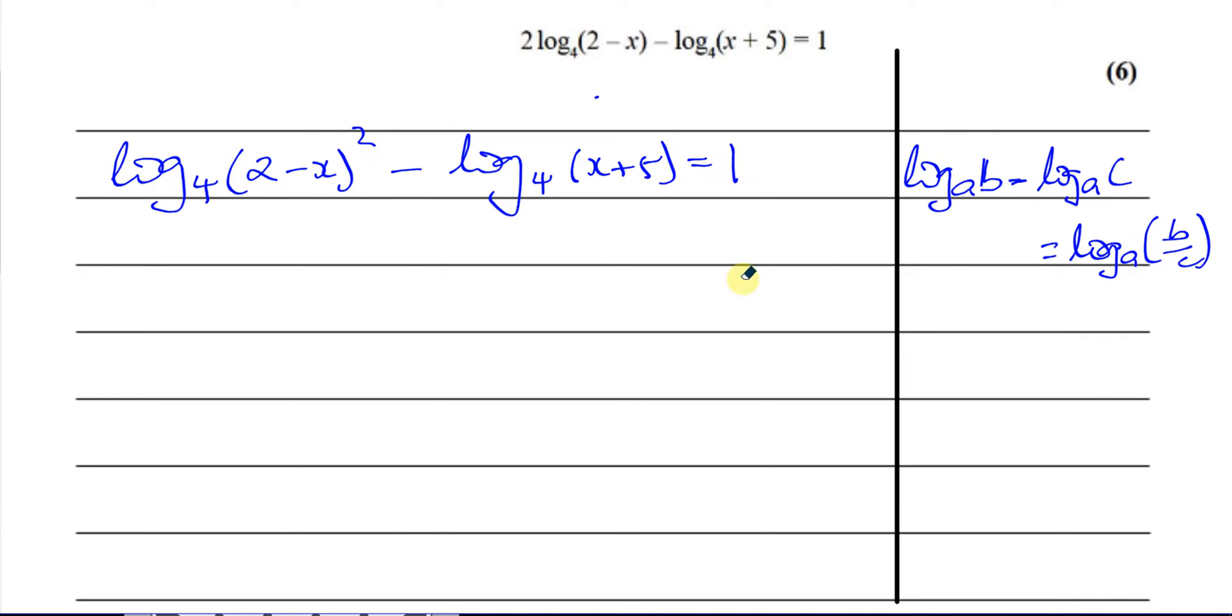So here I can rewrite this as log to the base 4 of (2 - x)² over (x + 5), and that's going to equal 1. We can use the fact that, for example, log to the base A of B equals C can be rewritten as A to the power of C equals B. The base is this, this is the power, this is the result. So this is the base 4 to the power of 1 equals, you can say 4 to the power of 1 is equal to all of this: (2 - x)² over (x + 5).